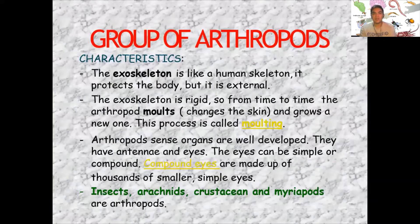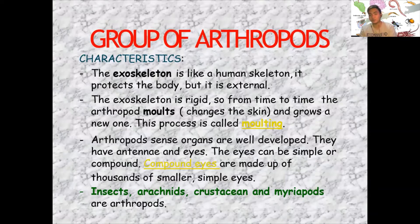The exoskeleton of arthropods is like a human skeleton — it protects the body but is external. Because the exoskeleton is rigid, arthropods molt, or change their skin, from time to time and grow a new one. This happens because arthropods are also growing, so when they grow they break or shed their skin, and then a new skin grows to protect them. This process is called molting.